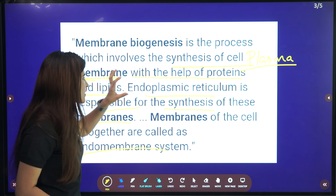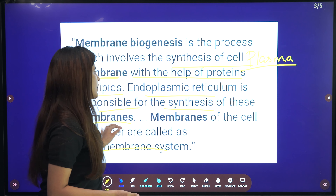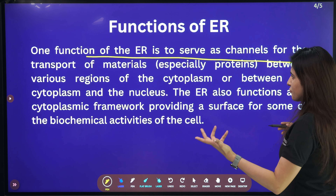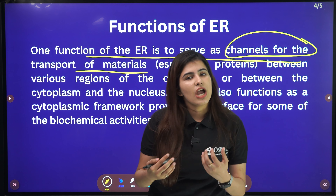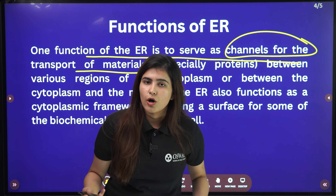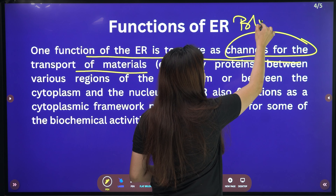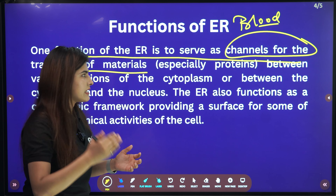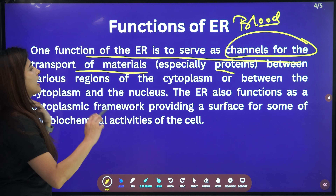The proteins and lipids which cover the animal cell in its plasma membrane are directly produced in our endoplasmic reticulum. Now coming to ER functions — one function of the ER is to serve as a channel for transport of materials. Just like in our body things are transported through blood, the ER acts as a path for transporting materials within the cell.